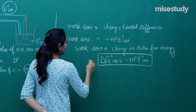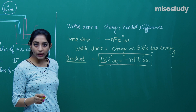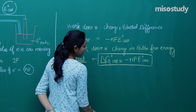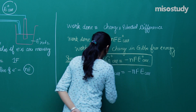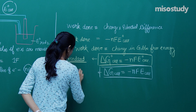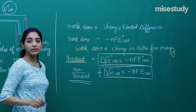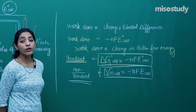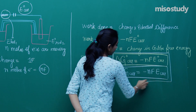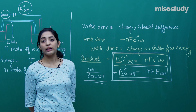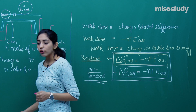This is the formula for standard conditions: ΔG° cell = −nFE° cell. For non-standard conditions, we simply write ΔG cell = −nF × E cell. This is the main formula I wanted to derive in today's class — the correlation between Gibbs free energy and electrode potential.